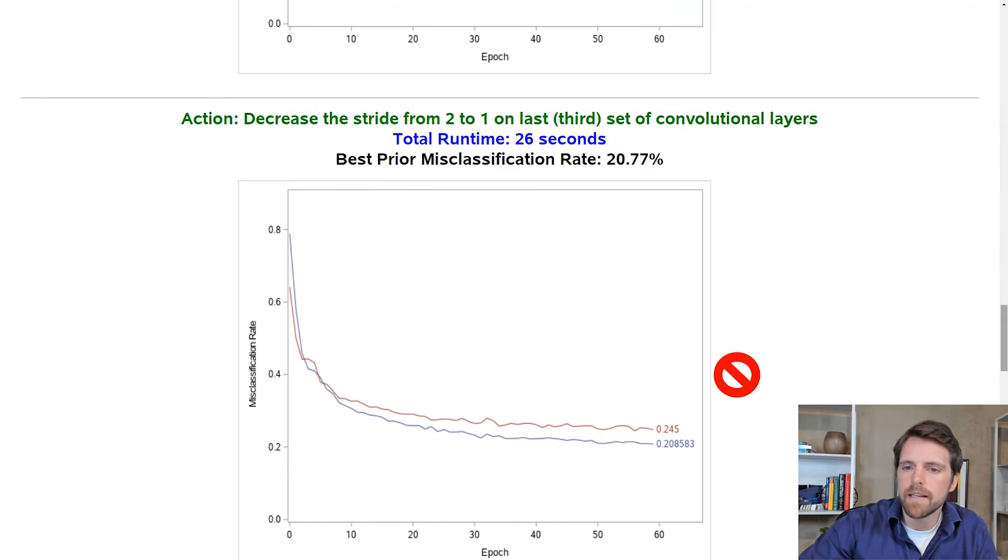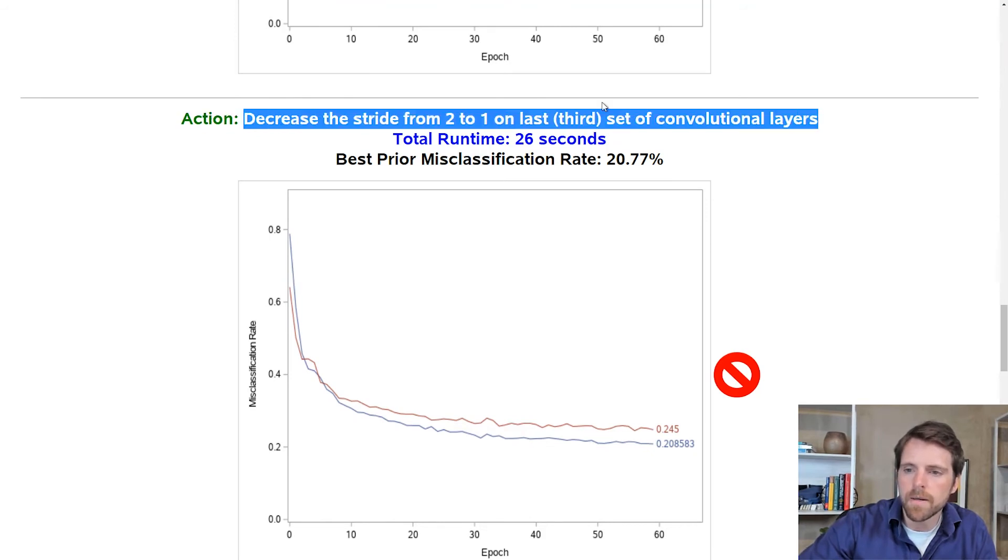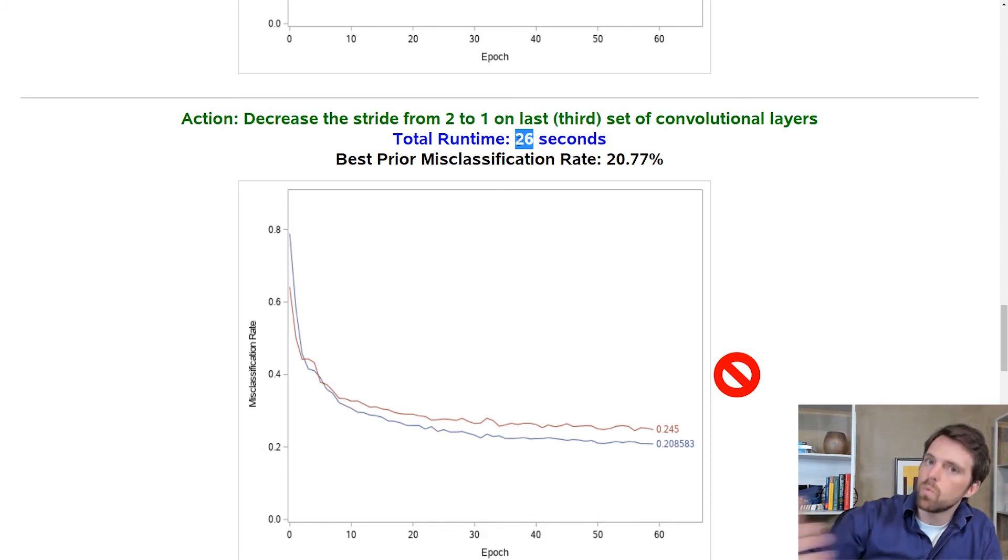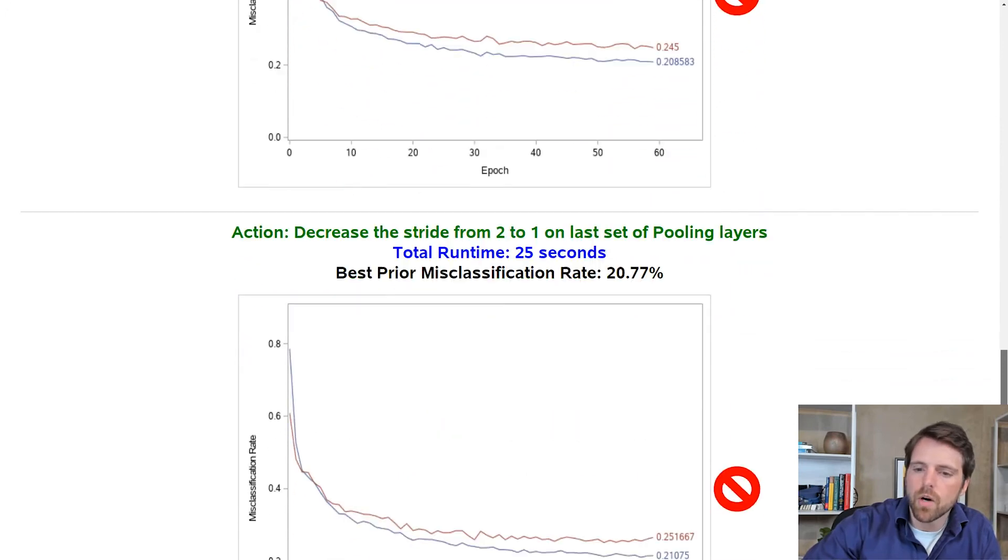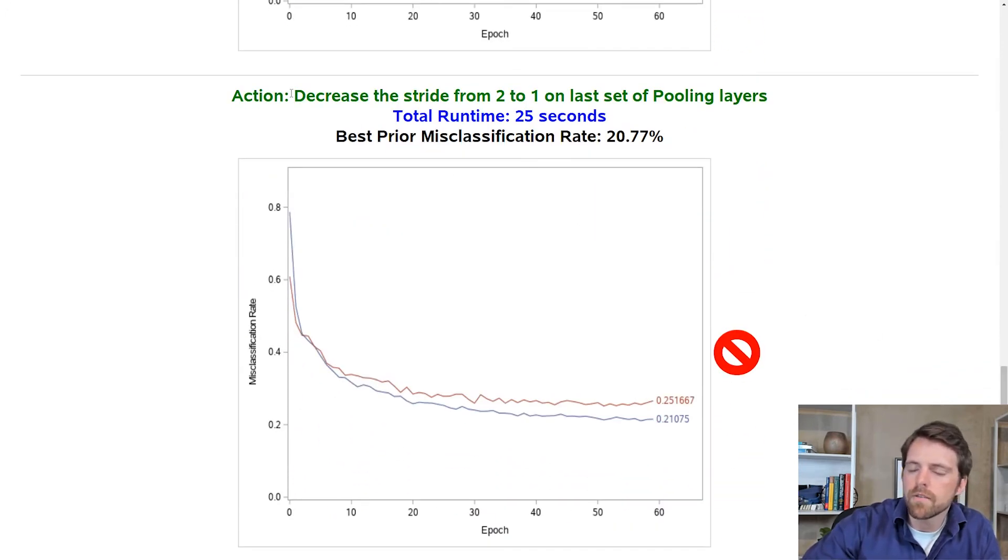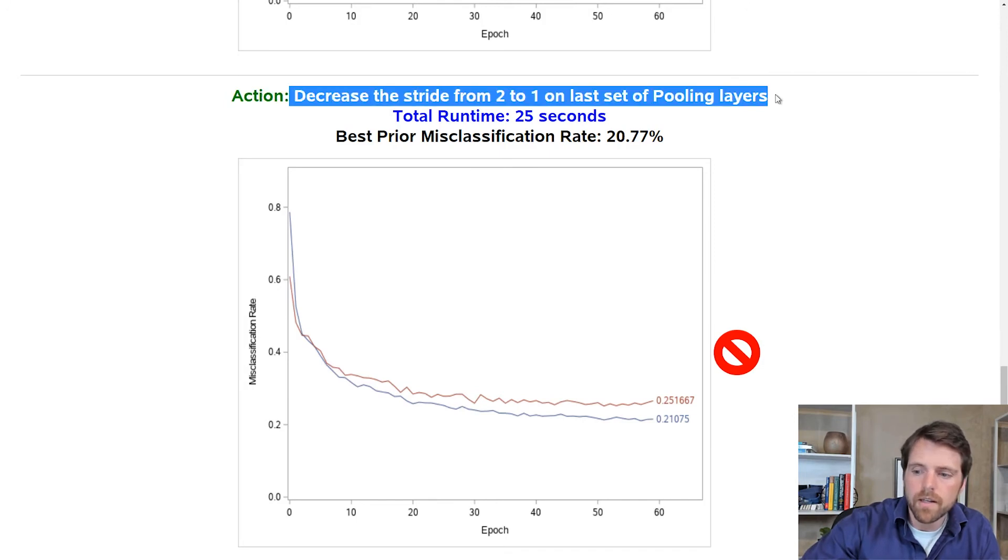The next change that I made is that I decreased the stride from two to one on the last, that is the third set of convolutional layers. Decreasing the stride effectively increases the amount of data that's fed to the fully connected neurons. So there was a computational cost there, as well as the weights and the filters themselves. But you'll notice that the performance of the model and the training data didn't really improve. It basically stayed the same. So that wasn't the right move. I then tried to decrease the stride from two to one on the last set of pooling layers. This also was not the right move to make because performance on the training data did not improve and we had a cost in time.